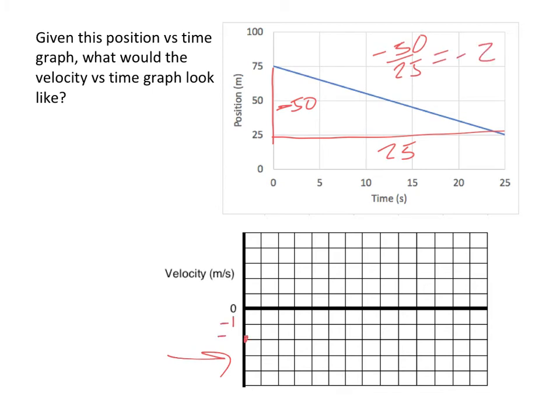If I label this negative 1, negative 2, the velocity does not change. This is what a velocity graph would look like for this particular position versus time graph. It's consistent the whole way. It's moving left, so the velocity is negative.